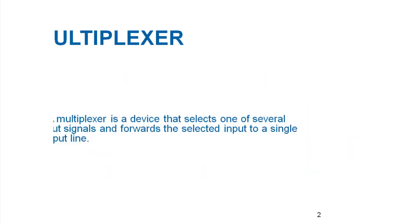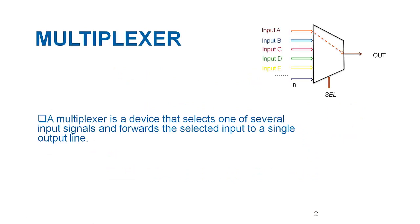Let us start with defining a multiplexer first. A multiplexer is a device that selects one of several input signals and forwards the selected input to a single output line.